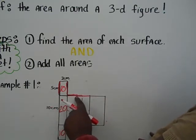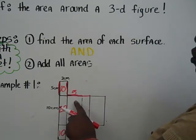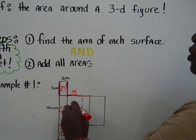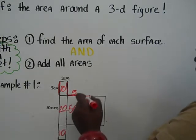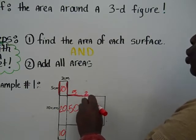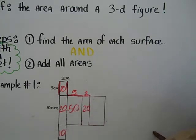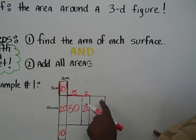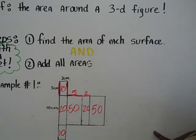So that means that this rectangle is a 5 by 10, which is 50 centimeters squared. Beside that is a 2 by 10, which is 20 centimeters squared. And lastly, another 5 by 10, which we already know is 50 centimeters squared.